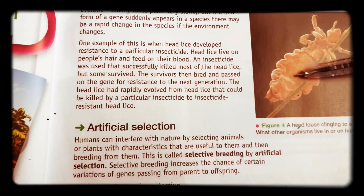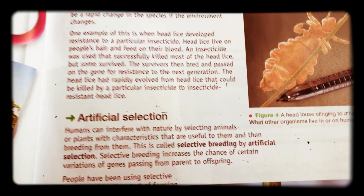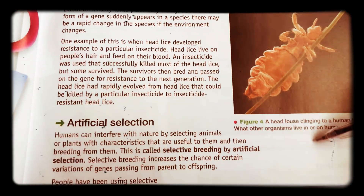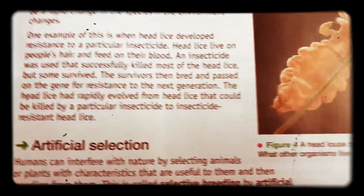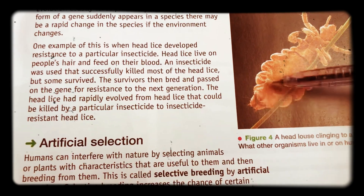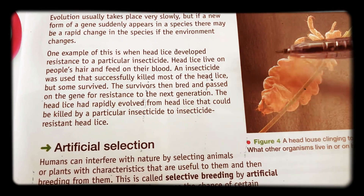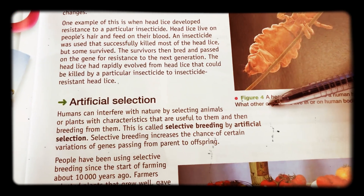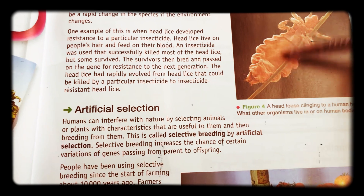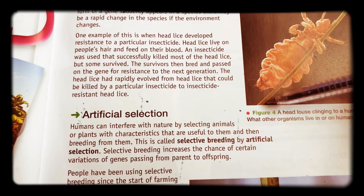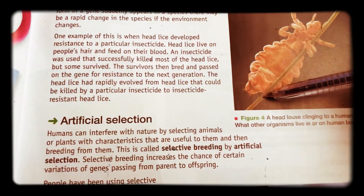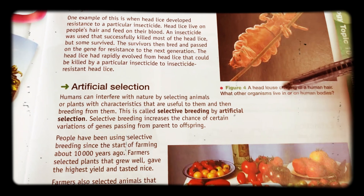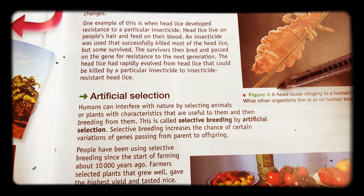Evolution usually takes place very slowly. But perhaps if there's a gene that suddenly appears in a species, there may be a rapid change if the environment changes. One example of this is head lice — if there's a resistance to a particular insecticide, the head lice will survive, breed, and pass on that gene for resistance to the next generation. The head lice then rapidly evolves from being killed by a particular insecticide to being insecticide resistant. We've also studied this in the context of antibiotics.